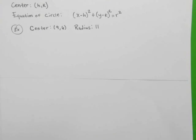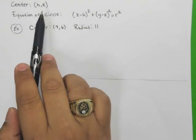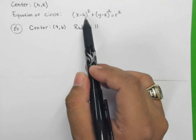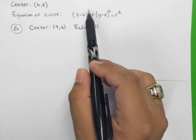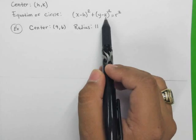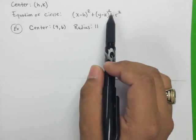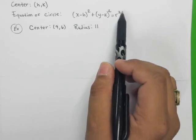So we're looking here at the equation of a circle, and we've got a center h and k. This is the equation of a circle: x minus the x-coordinate, which is h, squared, plus y minus the k-value, which is the y-coordinate of the center, squared, and it equals the radius squared.